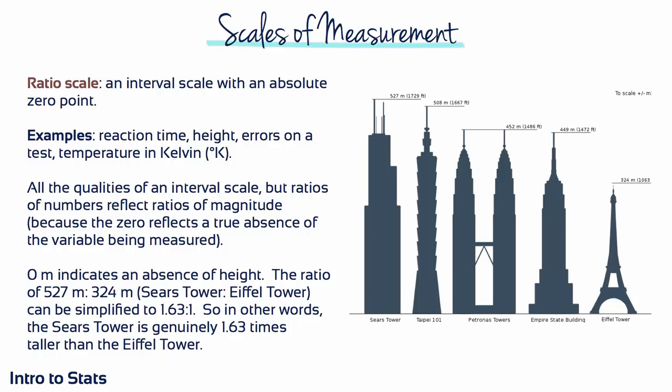A ratio scale is an interval scale with the additional feature of an absolute zero point, so ratios of numbers do reflect ratios of magnitude. A ratio scale is anchored by a zero point that is not arbitrary but rather a meaningful value representing none — a complete absence of the variable being measured. For example, an individual who took ten seconds to solve a problem has taken twice as much time as one who finished in five seconds. With a ratio scale, we can measure the direction and size of differences between two measurements and describe the difference in terms of a ratio.